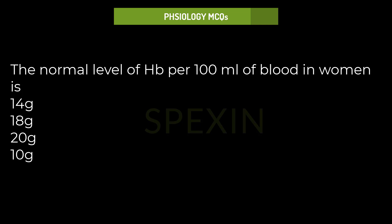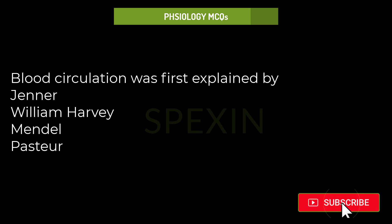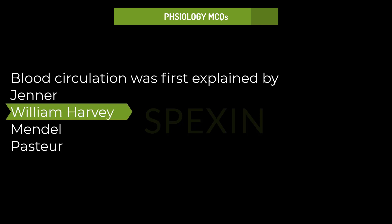The normal level of hemoglobin per 100 ml of blood in women is: 14 grams, 18 grams, 20 grams, 10 grams. Correct answer: 14 grams.